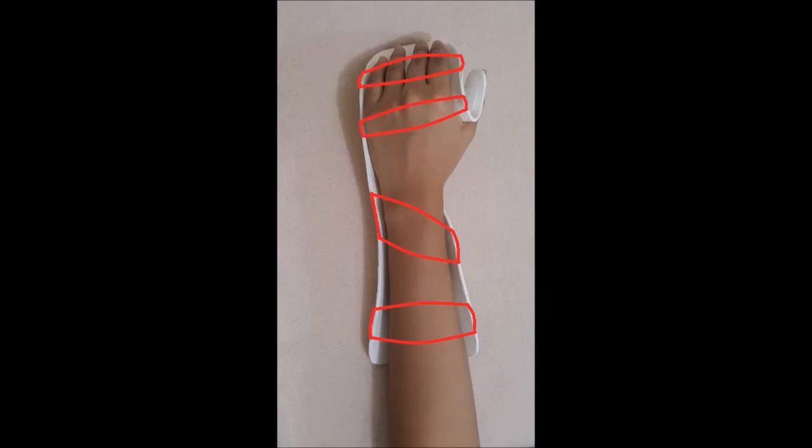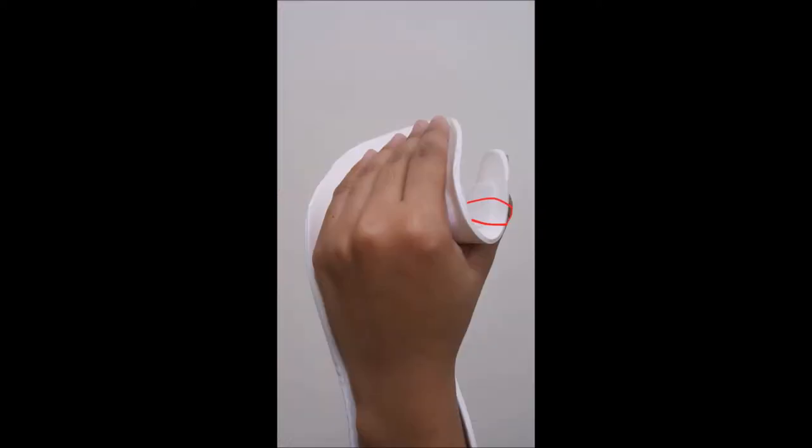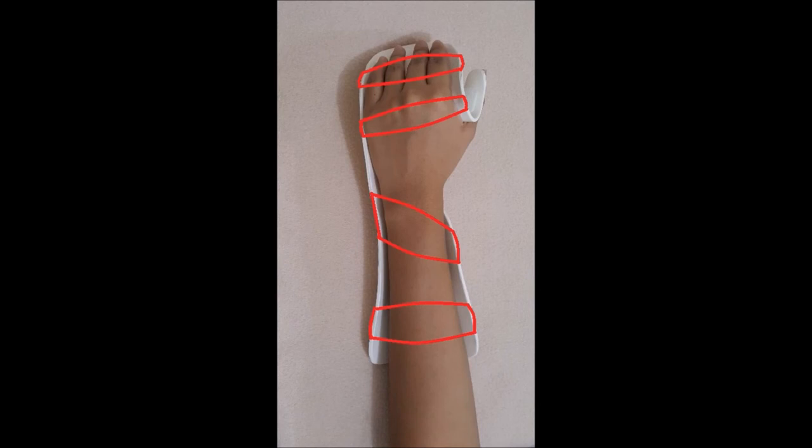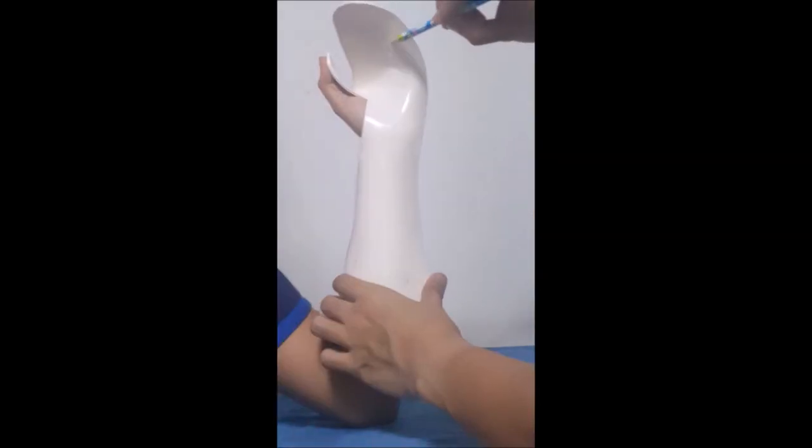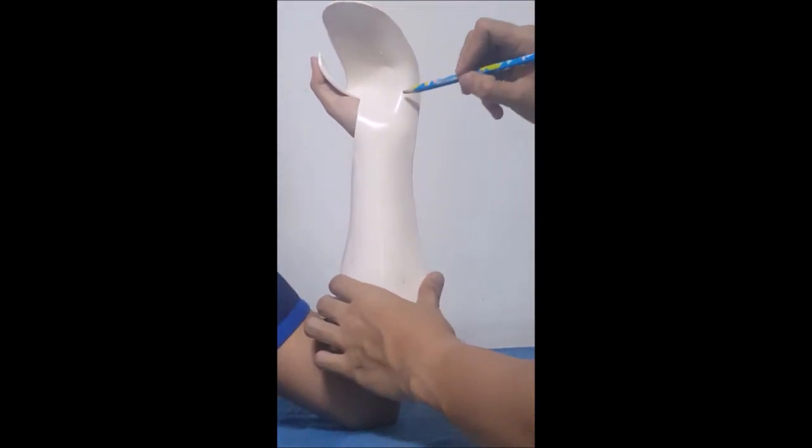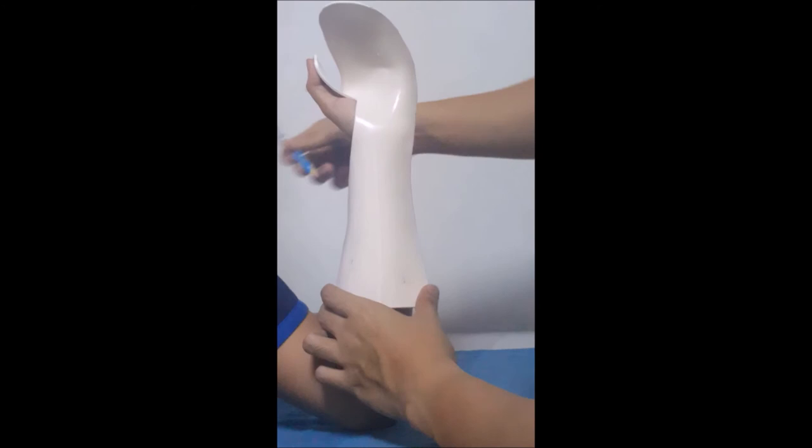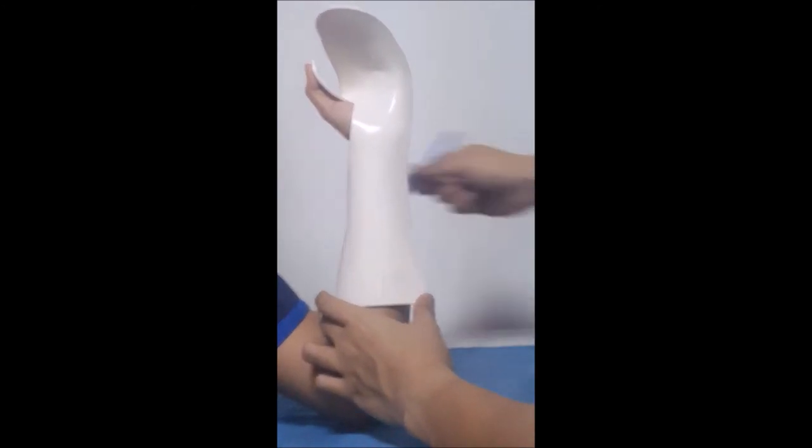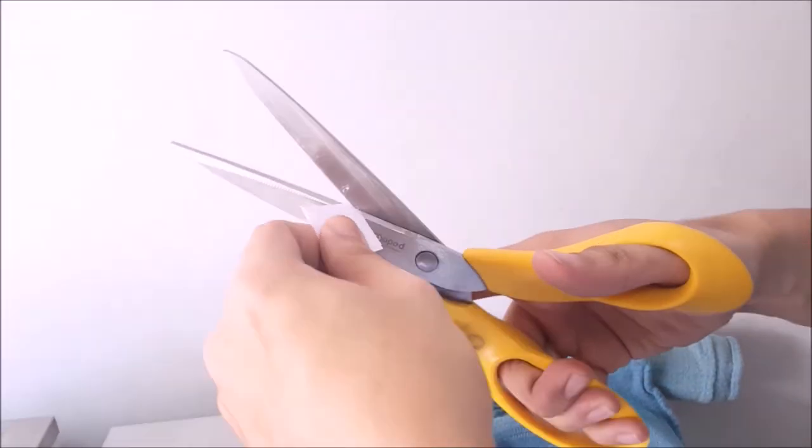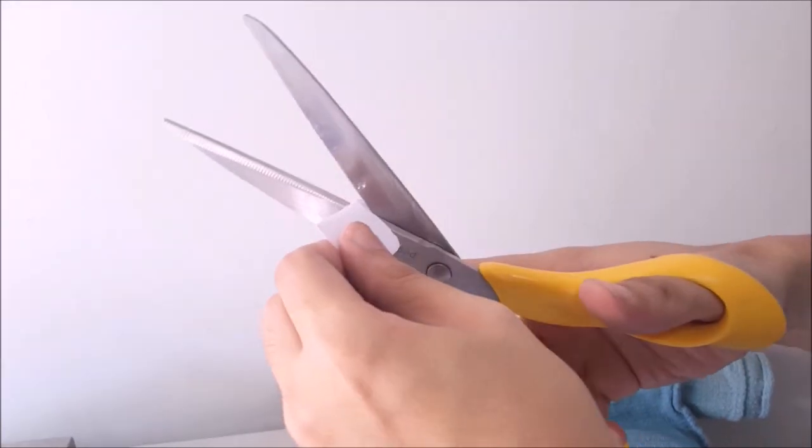Strapping: The straps should be across the PIP joint, proximal to MCP joints. For the thumb, proximal to IP joint, across the wrist, and across the proximal forearm trough. Now mark the landmarks for strapping. Make sure there are rounded corners of the straps.